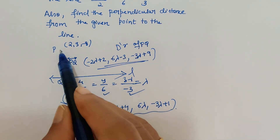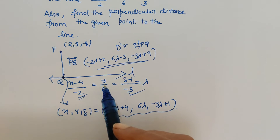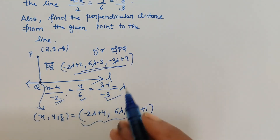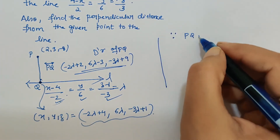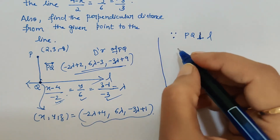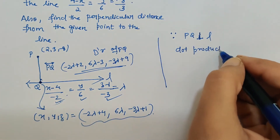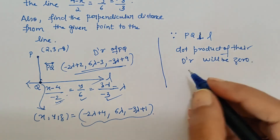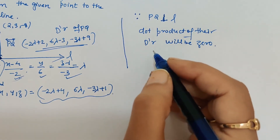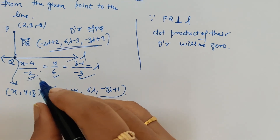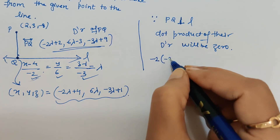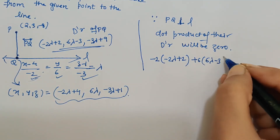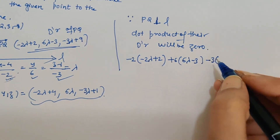Since PQ is perpendicular to line L, the dot product of their direction ratios equals zero. So we compute: (-2)(-2λ + 2) + (6)(6λ - 3) + (-3)(-3λ + 9) = 0, which gives 4λ - 4 + 36λ - 18 + 9λ - 27 = 0.